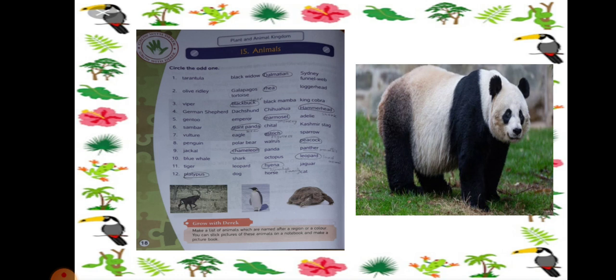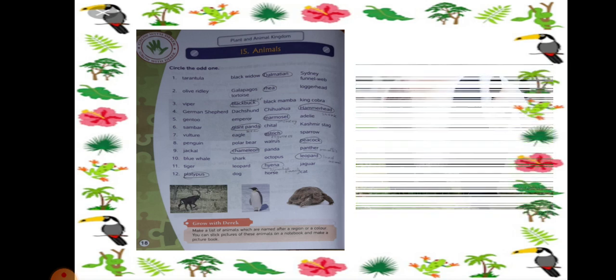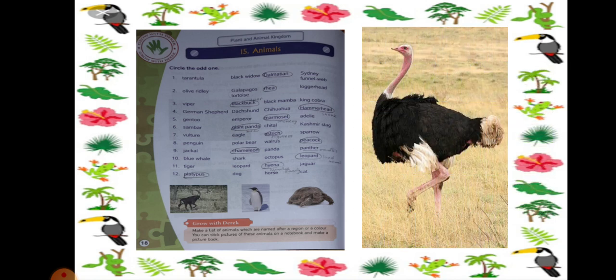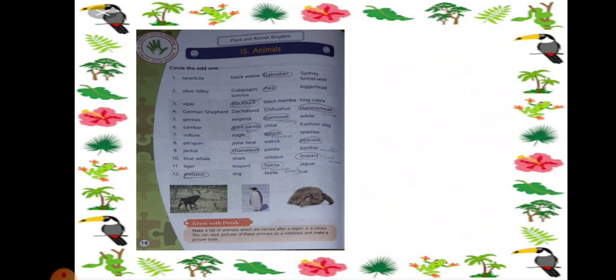Next number 7, Ostrich will be separated because Ostrich is a flightless bird. It cannot fly. And Sparrow, Eagle and Vulture they can fly. That is why this is the odd one out. Number 8: Penguin, Polar Bear, Walrus and Peacock. All Penguin, Polar Bear and Walrus are common. Whereas Peacock is a bird. So it is odd one.